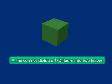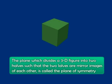Only a plane can divide a three-dimensional figure into two halves. And such a plane is known as the plane of symmetry. How do you define it? The plane which divides a three-dimensional figure into two halves such that the two halves are mirror images of each other is called the plane of symmetry.